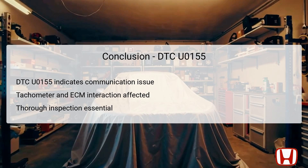In conclusion, DTC U0155 points to a crucial communication issue within the F-CAN network between the ECM and the gauge control module. Identifying the root cause is vital, as these components work closely to relay important information to the driver. Proper troubleshooting steps were outlined, emphasizing thorough inspections for wiring continuity, connections, and replacement of faulty components. Regular diagnostics can help monitor the health of these systems, ensuring optimal vehicle performance and enhancing overall safety and operational efficiency.